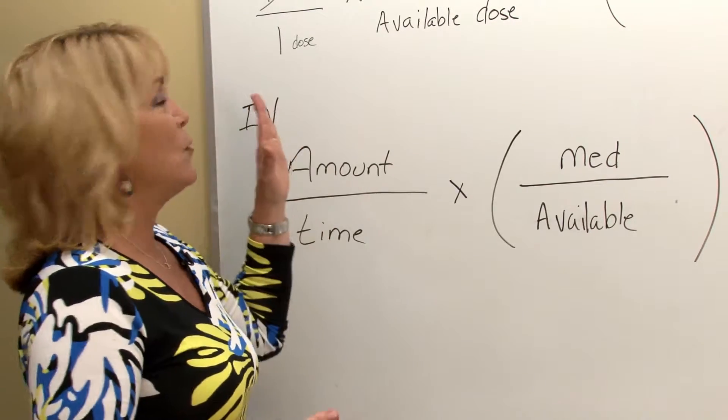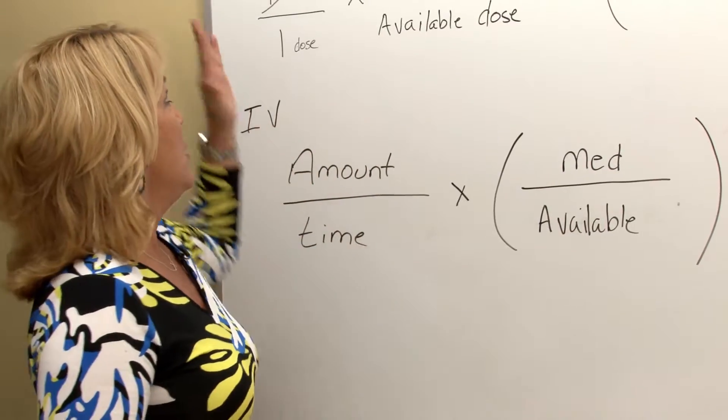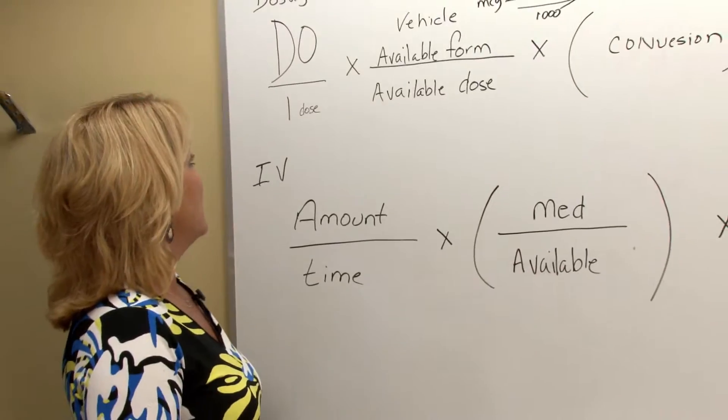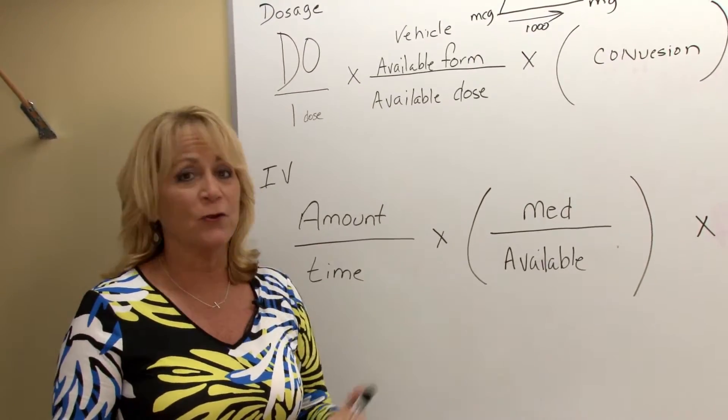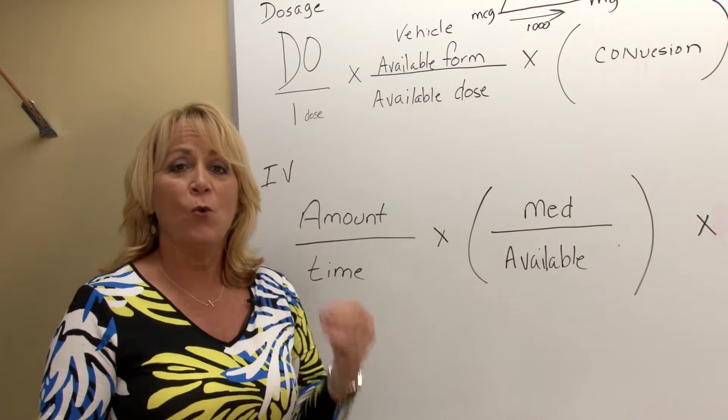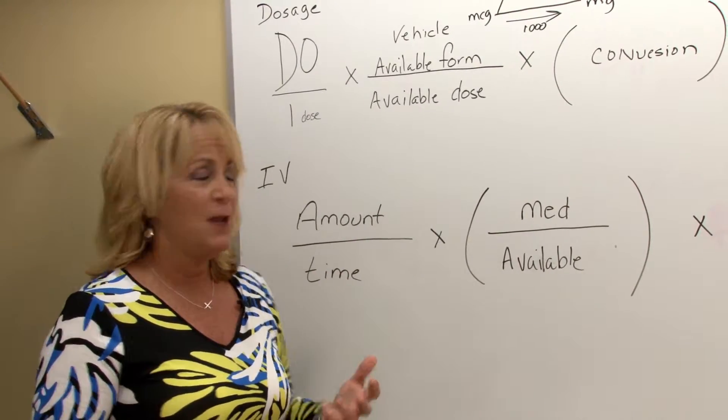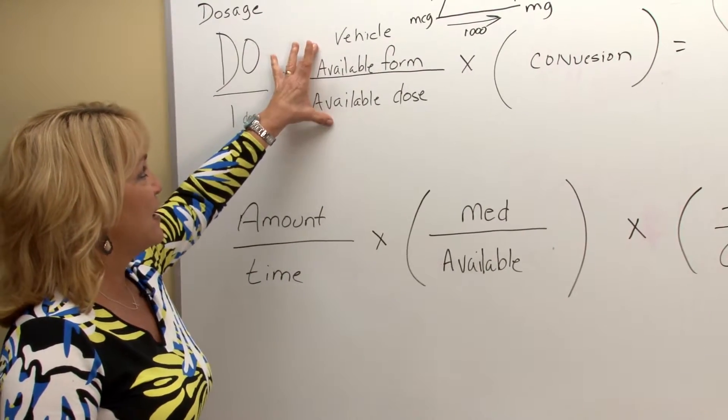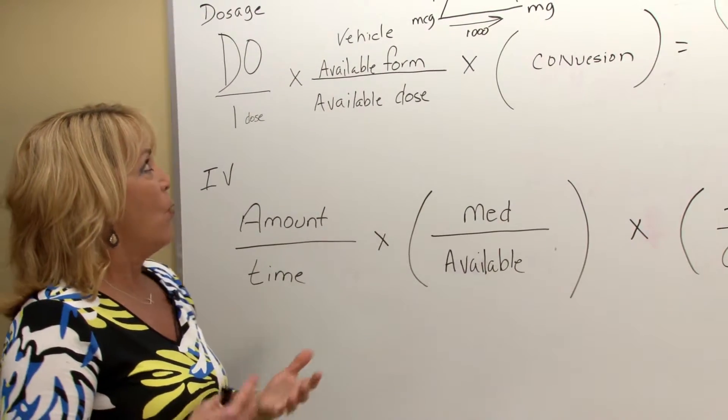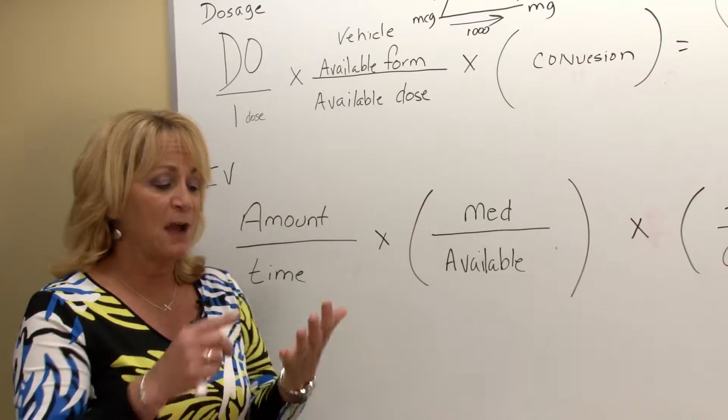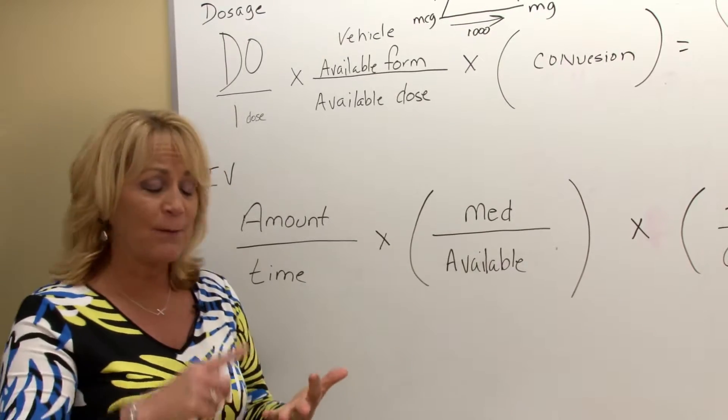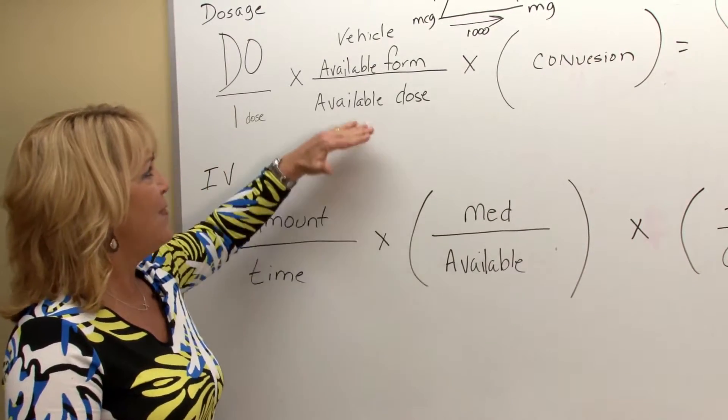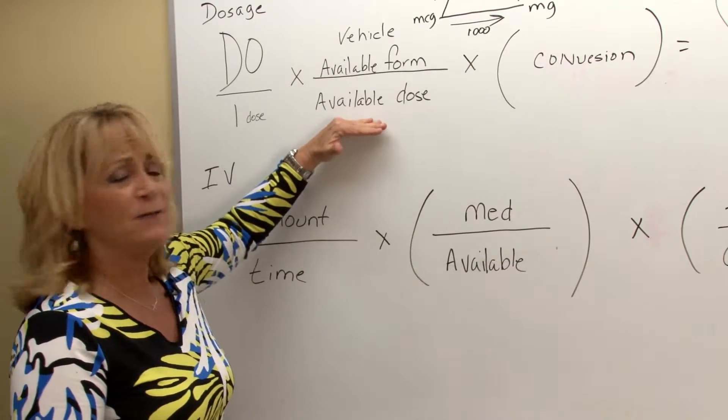So we're going to start with this one here called doctor order. This is where the doctor or nurse practitioner or PA orders a medication for one time, one dose. And then we have to know in the second part of our equation, what is the available form? How does this come? Does it come in tabs? Does it come in capsules? Does it come in mils? And then of that form, what is the available dose?